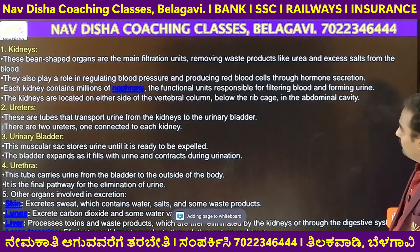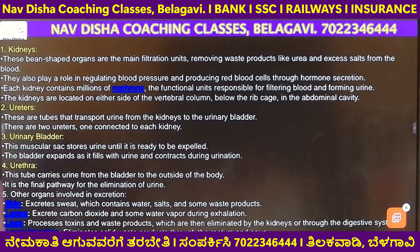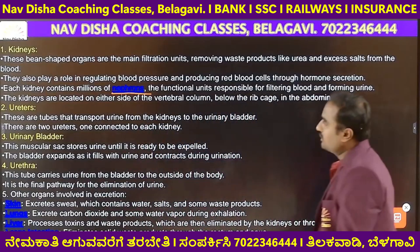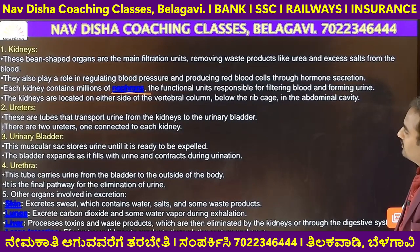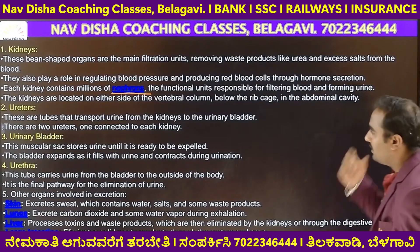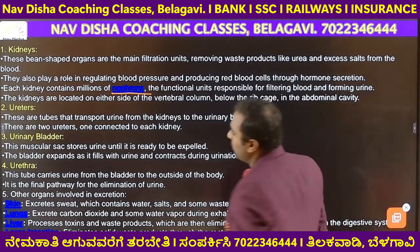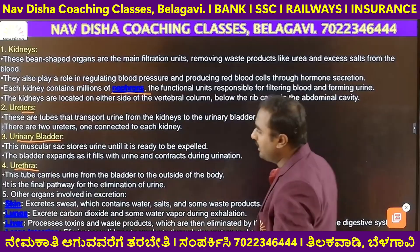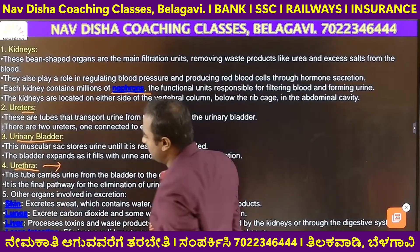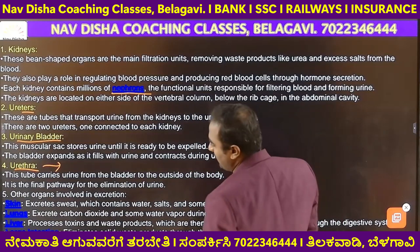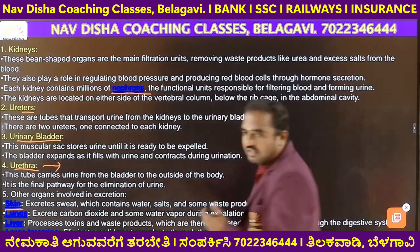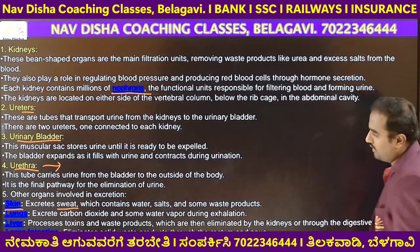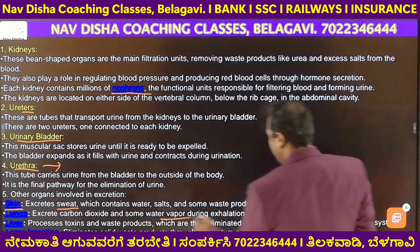This is about the excretory system. Each kidney contains millions of nephrons — nephron is the basic unit and functional unit of the kidney. The kidneys are located on either side of the vertebral column. Two ureters connect each kidney to the urinary bladder, and the urethra removes the waste outside. Skin also removes waste particles in the form of sweat, which contains water, salt, and some waste products. During exhalation, lungs excrete carbon dioxide and water vapour.